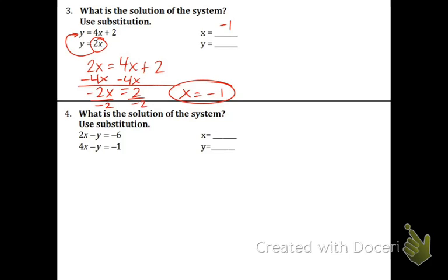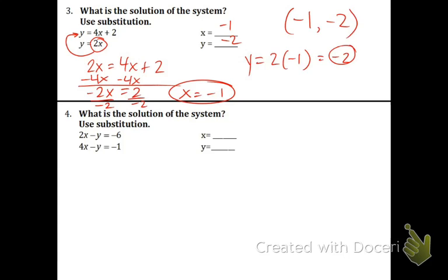Now take that negative 1 and plug it in for either equation. The easiest one is the circled one. So take the negative 1, plug it in for the x. 2 times negative 1 equals negative 2. There's our y. Put it in coordinate form, which would be negative 1 comma negative 2. Remember, when in doubt, plug in the point and see if it works.